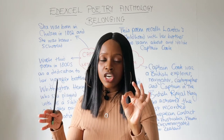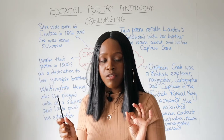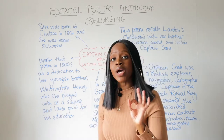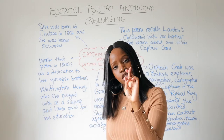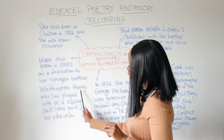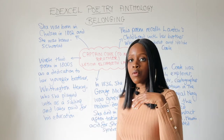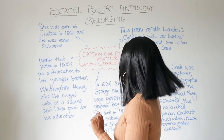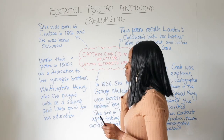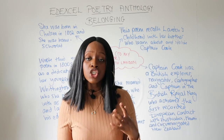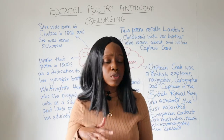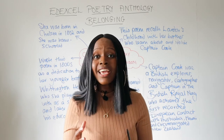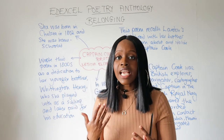The second important thing relates to the parenthesis within the title of the poem — parenthesis is just a fancy word for brackets. When she says 'to my brother,' she wrote this poem in the 1800s as a dedication to her younger brother. She was very close to him; her younger brother was called Whittington Henry and was only about two years younger than her. They used to play together as siblings when small.